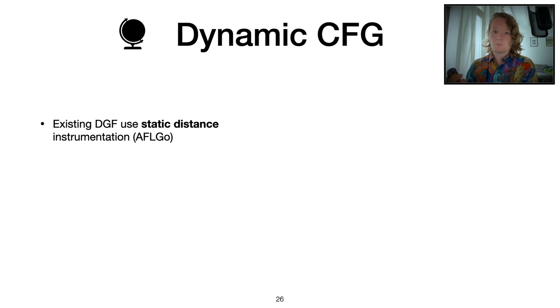AFLGO statically instruments the binary with some instrumentation that calculates the distance for a certain run of a program. It adds some static instrumentation to basic blocks to get out one distance metric.